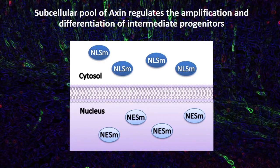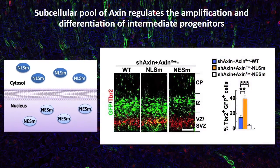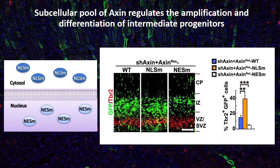Next, we investigated how axin regulates intermediate progenitor amplification and neurodifferentiation. We observed that axin was enriched in the nuclei of neuroprogenitors upon differentiation. We manipulated the localization of axin using point mutants that allow the protein to be expressed specifically in the cytoplasm or the nucleus. Cytoplasmic axin in radial glia enhanced intermediate progenitor amplification, while nuclear axin in intermediate progenitors promoted neurodifferentiation.